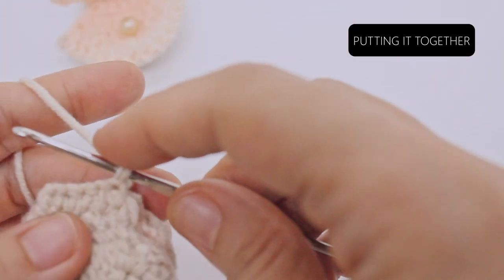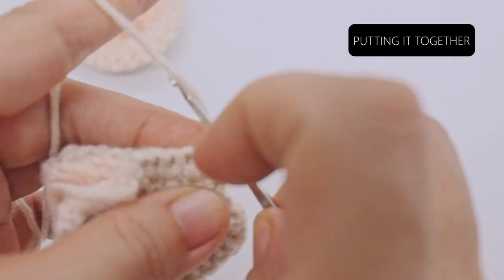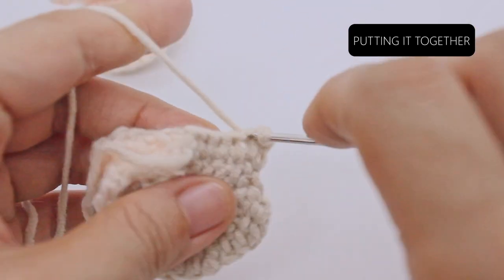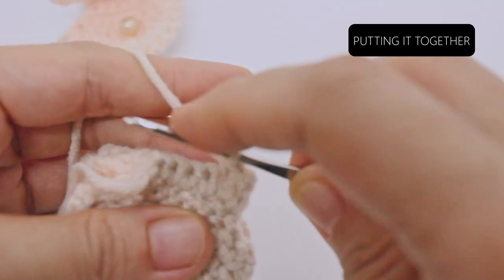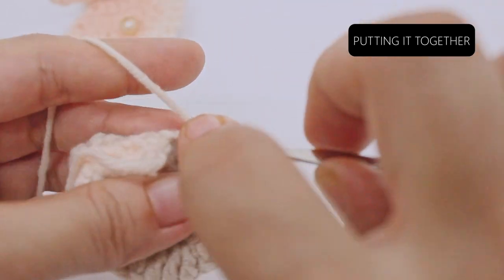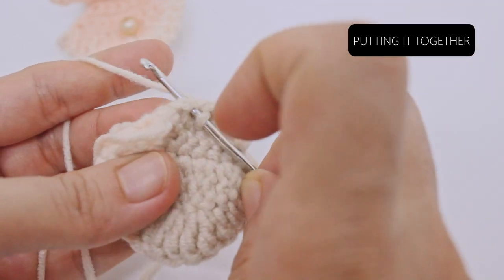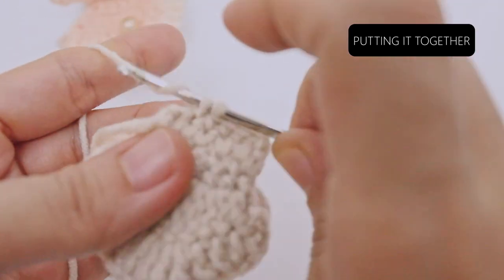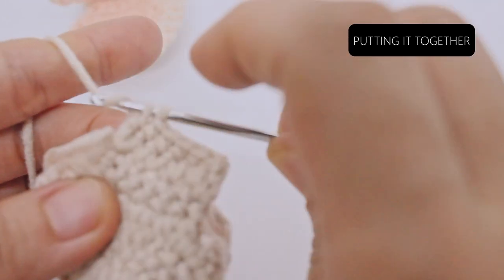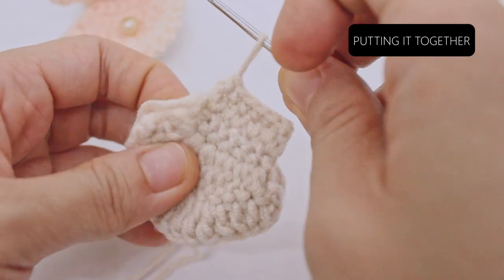Turn your work. Row two: chain one, single crochet in every stitch in the row. Fasten off and weave in any loose ends.